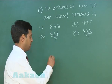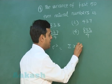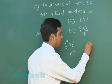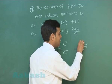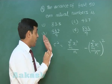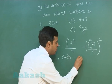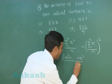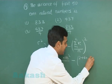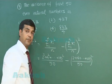For variance, σ² = (Σxᵢ²)/n − ((Σxᵢ)/n)². For even natural numbers, the numerator involves 2² + 4² + ... + 100² divided by 50, and the second term is (2 + 4 + ... + 100) divided by 50, whole squared.